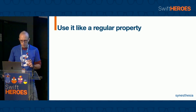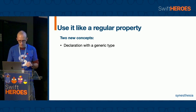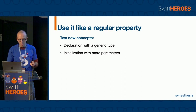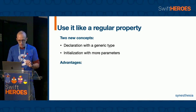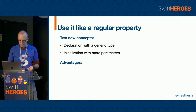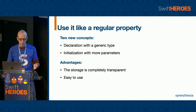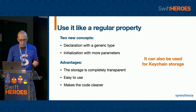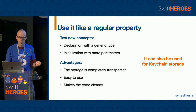In this example, we introduce two new concepts: the possibility to declare a property wrapper with a generic type, which increases the generalization of our code, and the possibility to initialize property wrappers with more parameters to increase their possibilities. The advantages are that the storage is completely transparent, the approach is easy to use, and this makes the code cleaner. We can also implement this approach for keychain storage — the implementation is pretty much the same; we have only to change the storage type and the logic inside the getter and setter methods.